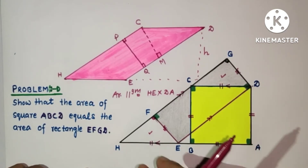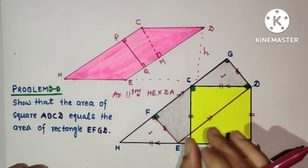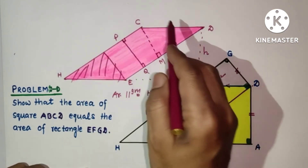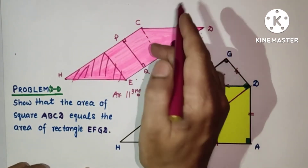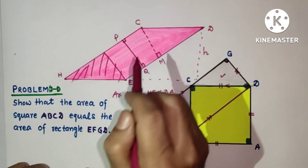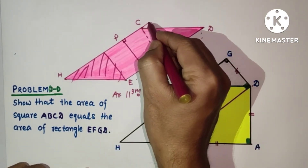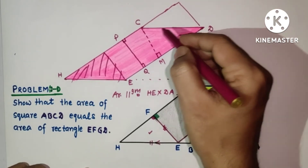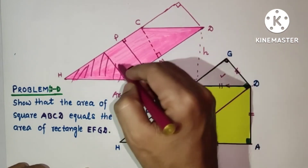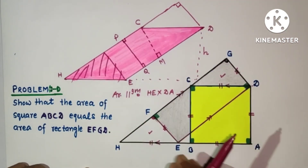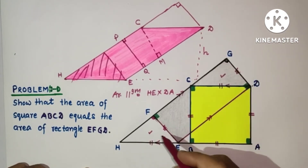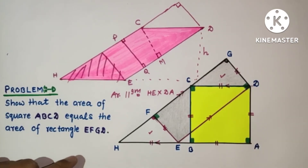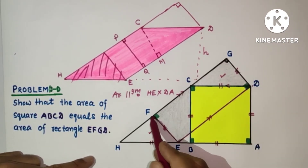Since these two triangles are congruent, the area of one triangle equals the area of the other. If we cut this triangular area from the parallelogram and paste it on the other side, the parallelogram rearranges into a rectangle. You can see that this is nothing but a rectangle — cutting and pasting reduces the parallelogram to the rectangle EDGF. So finally, the area of the parallelogram equals the area of the rectangle.